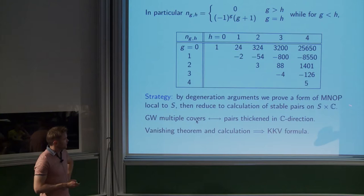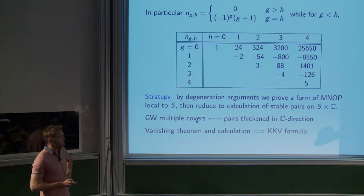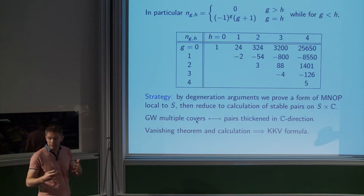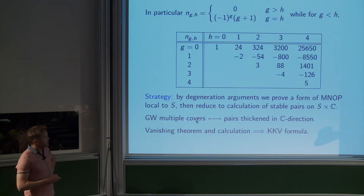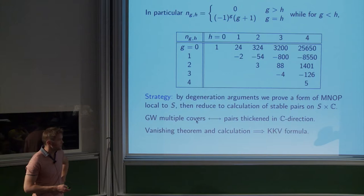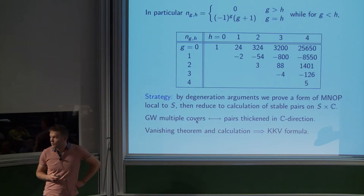We're going to degenerate. Pandharipande-Pandharipande-Pixton prove the MNOP conjecture for projective threefolds which can be degenerated to unions of toric varieties. We'll use that, but it gives something very global, and we want to use degeneration arguments to get a local MNOP conjecture local to S — for this kind of twistor space. Once we've used the MNOP conjecture to convert everything into stable pair theory, the multiple covers become scheme-theoretic thickenings of stable pairs, and those need to be calculated.